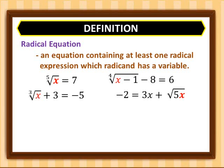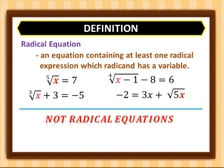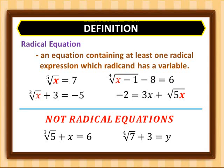These are not radical equations: the cube root of 5 plus x equals 6, and the fourth root of 7 plus 3 equals y. They are not radical equations because they do not contain a variable in the radicand, which is one of the requirements in the definition of a radical equation.